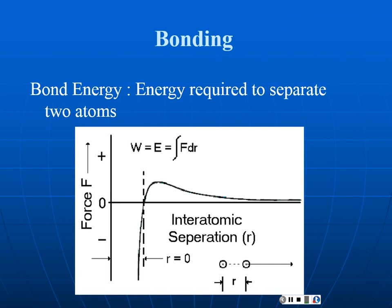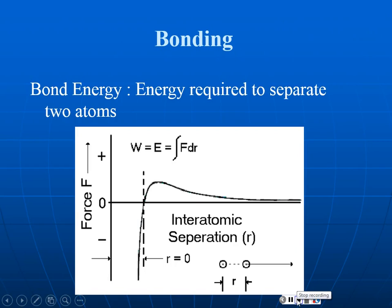If you've had physics, you know work is force times distance, but the force isn't constant — it's a varying value, so we have to add up all the individual elements. The total work to separate the atoms is the energy of the bond, and there are some ways we can measure that.